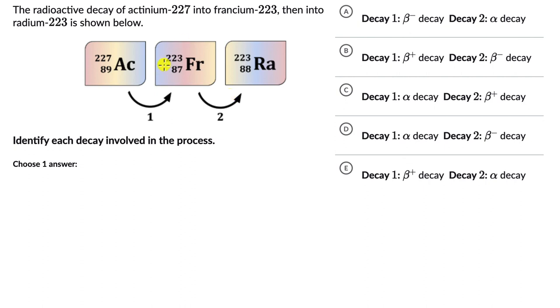Now in order to figure out what type of decay is occurring, we can look at how the mass number (A) is changing and how the proton number or atomic number (Z) is changing.